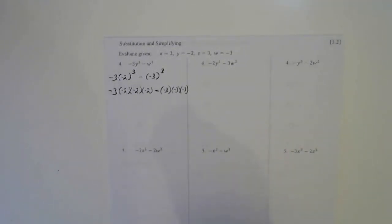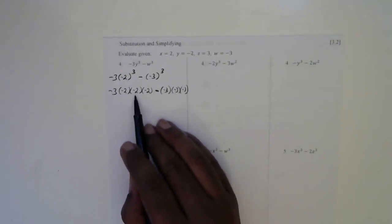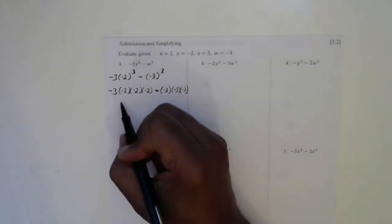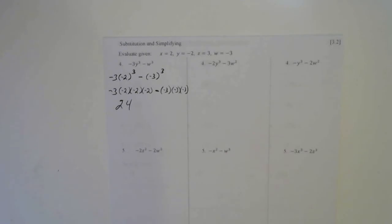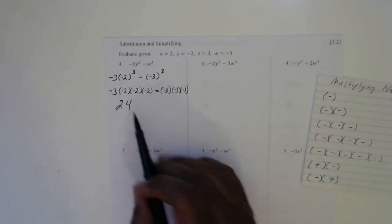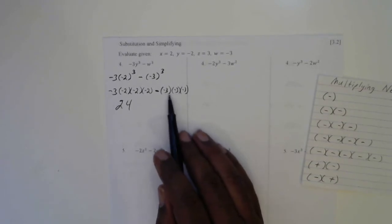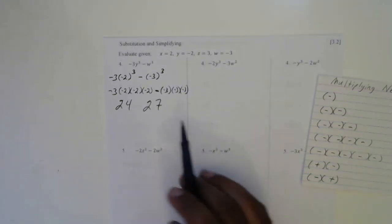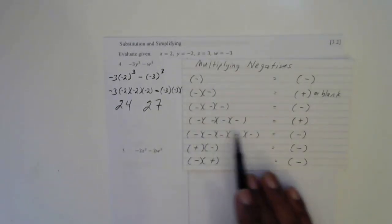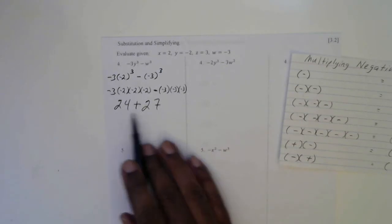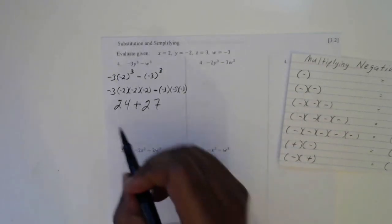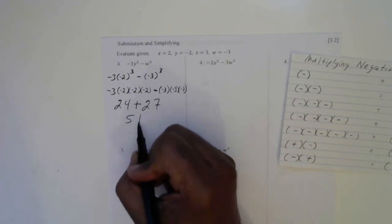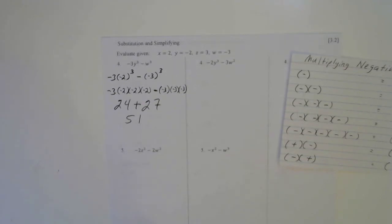Now let's start multiplying these numbers. 3 times 2 is 6, 6 times 2 is 12, and 12 times 2 is 24. Let's count the negatives: 1, 2, 3, 4 negatives. There are 4 negatives right here, and 4 negatives will be positive. So this will be positive 24. Then let's multiply here: 3 times 3 is 9, and then 9 times 3 is 27, it will be 27. And here we have 1, 2, 3, 4 negatives — 4 negatives is positive, so we'll put a positive 27. These are the same signs — positive 24 and positive 27 — same signs add, and we will get 51. The 27 is bigger, so this will be a positive 51.